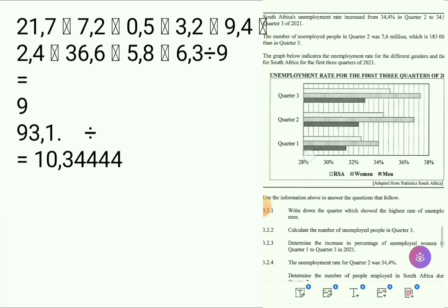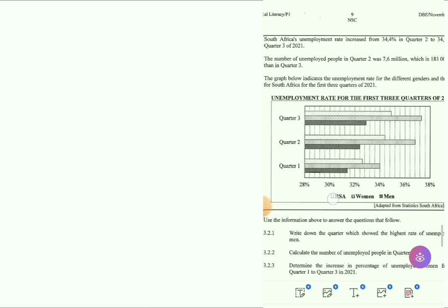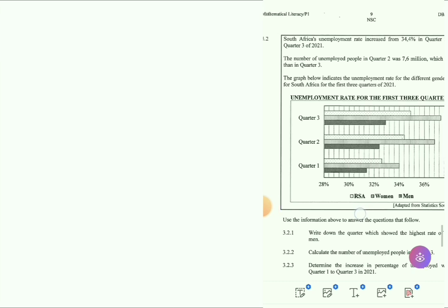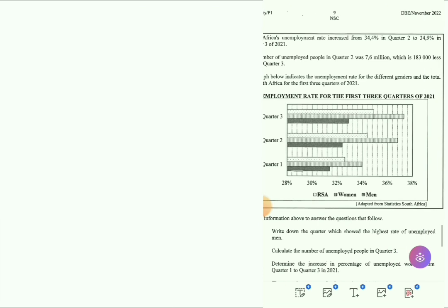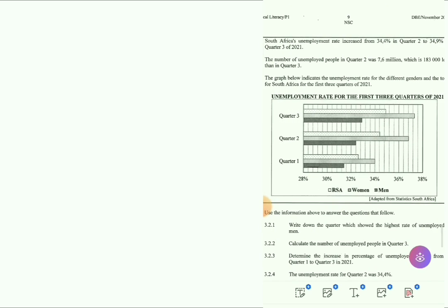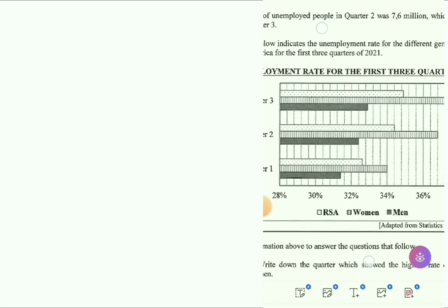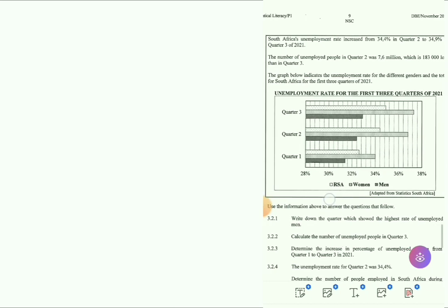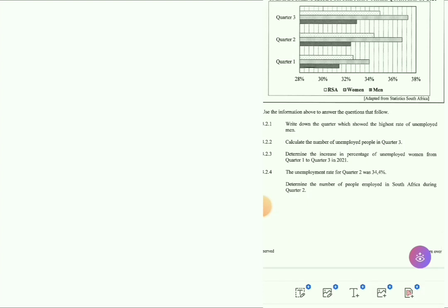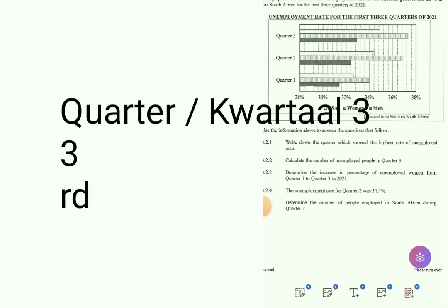Now we go to Question 3.2.1. South Africa's unemployment rate increased from 34.4% in Quarter 2 to 34.9% in Quarter 3 of 2021. The number of unemployed people in Quarter 2 was 7.6 million, which is 183,000 less than Quarter 3. The graph shows unemployment rates for different genders and the total for South Africa for the first three quarters. Question: write down the quarter which shows the highest rate of unemployment — that is Quarter 3.